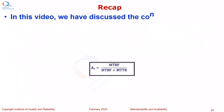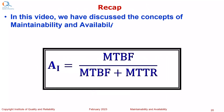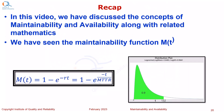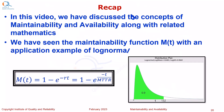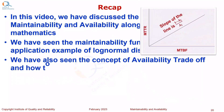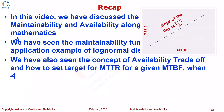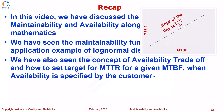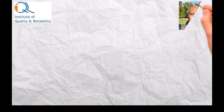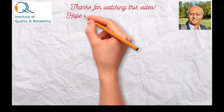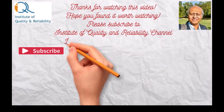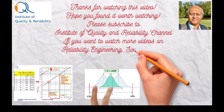In this video, we have discussed the concepts of maintainability and availability along with related mathematics. We have seen the maintainability function M of t with an application example of log-normal distribution. We have also seen the concept of availability trade-off and how to set a target for MTTR for a given value of MTBF when availability is specified by the customer. Thanks for watching. Please subscribe to the Institute of Quality and Reliability channel if you want to watch more videos on Reliability Engineering, Six Sigma, and Quality Engineering.